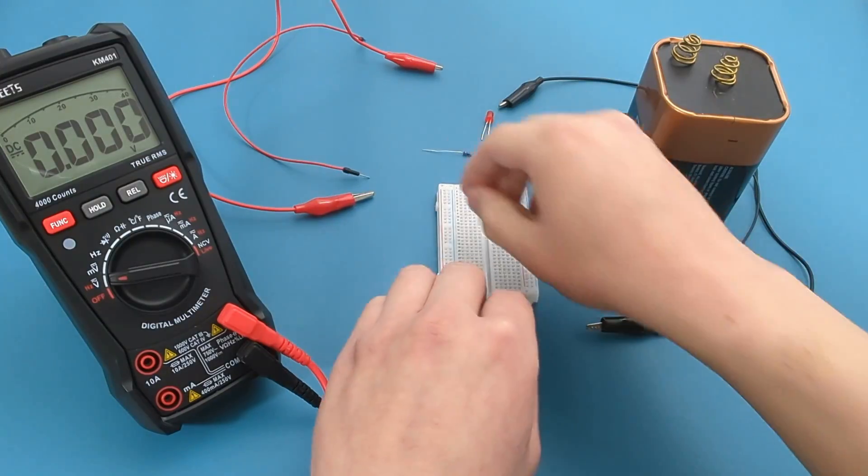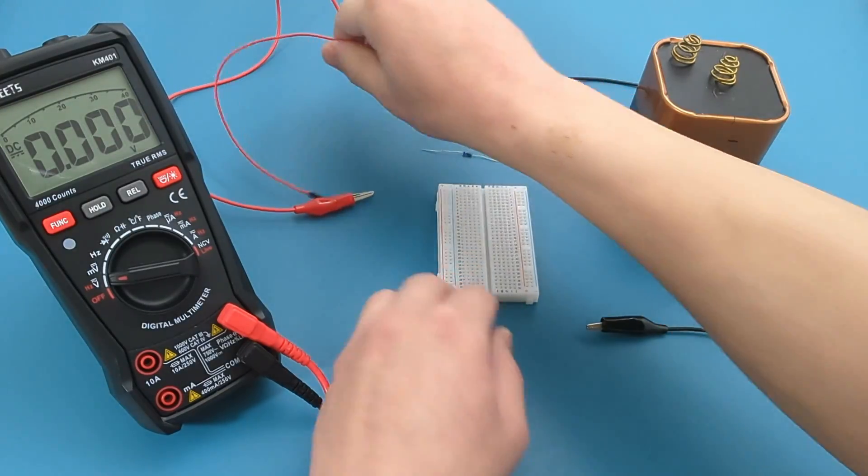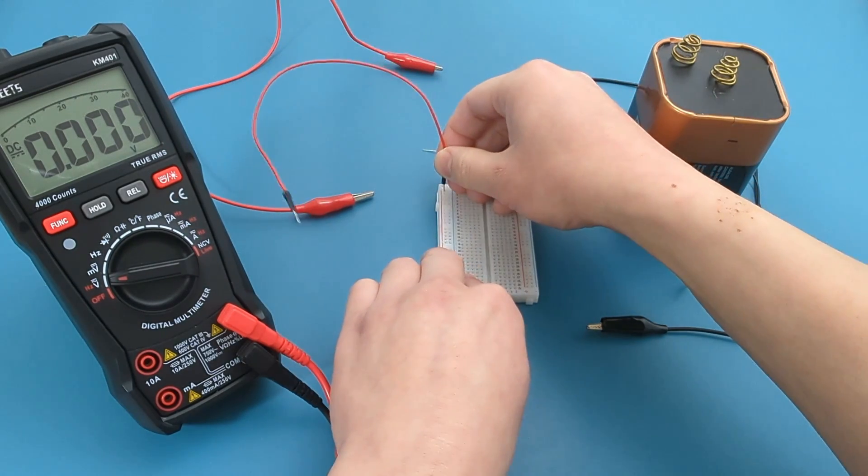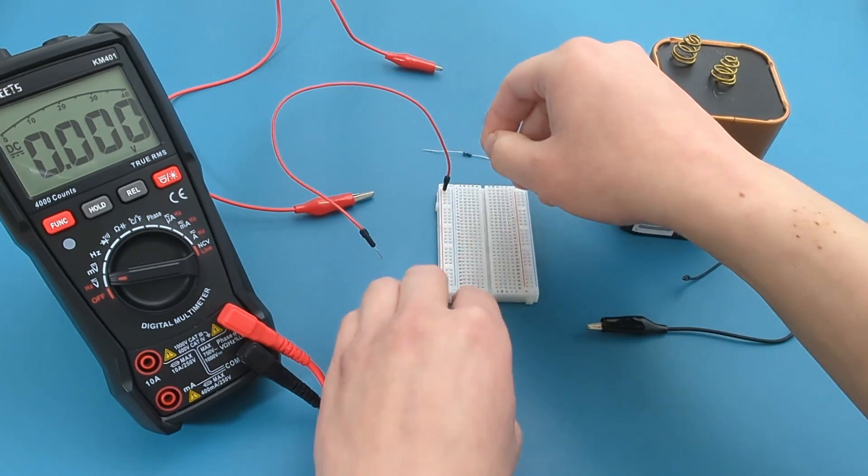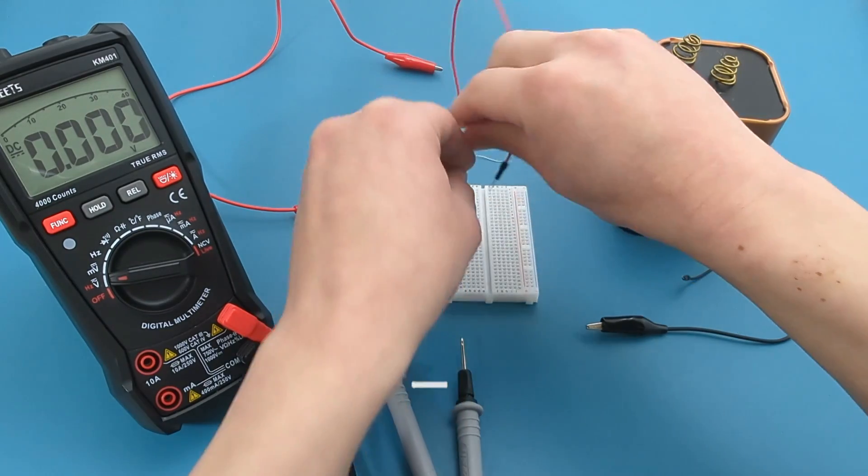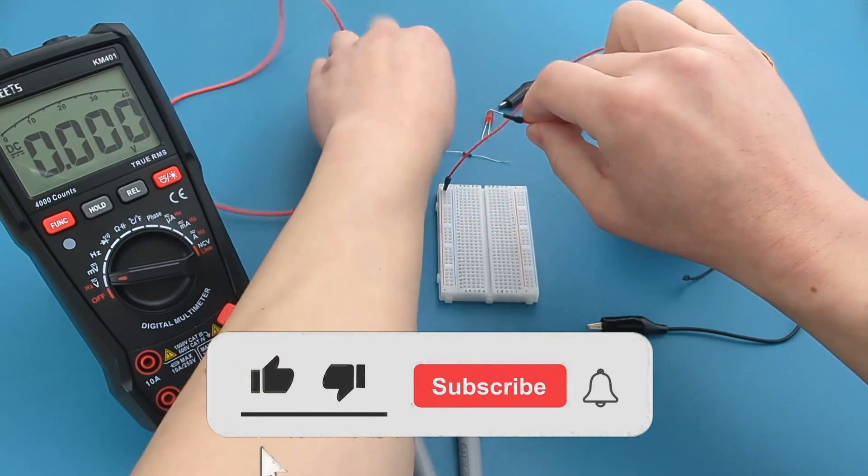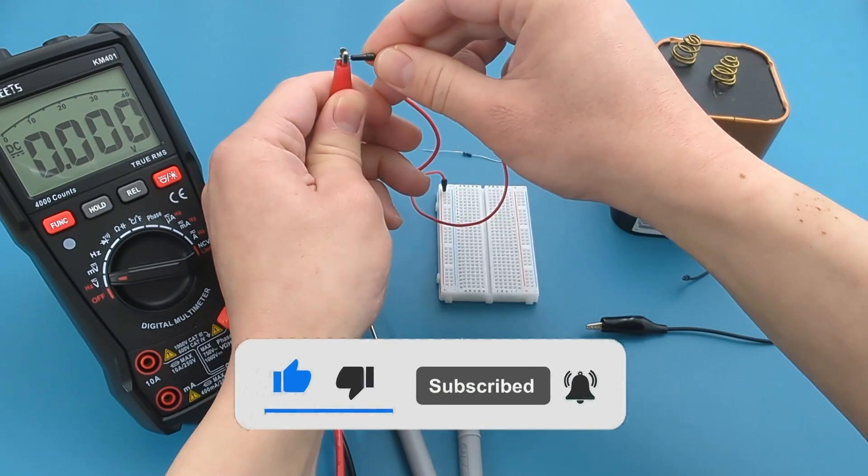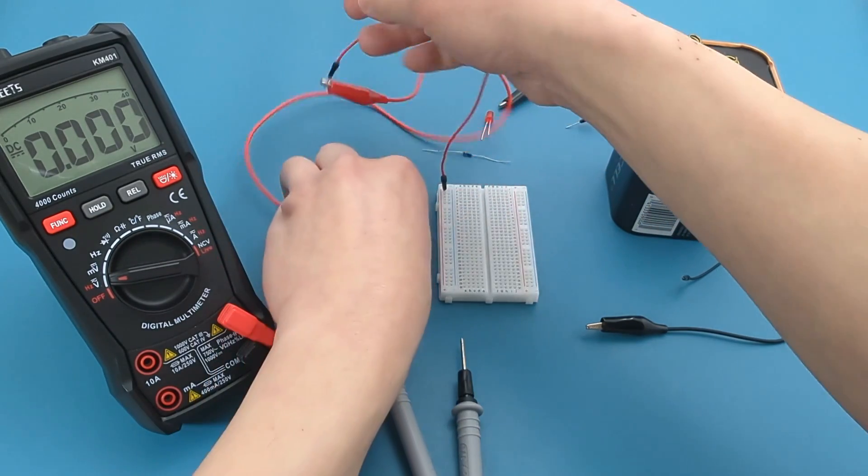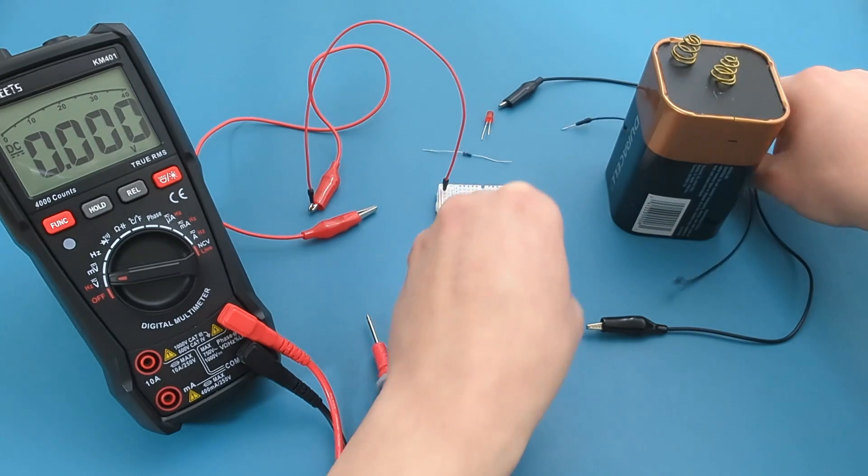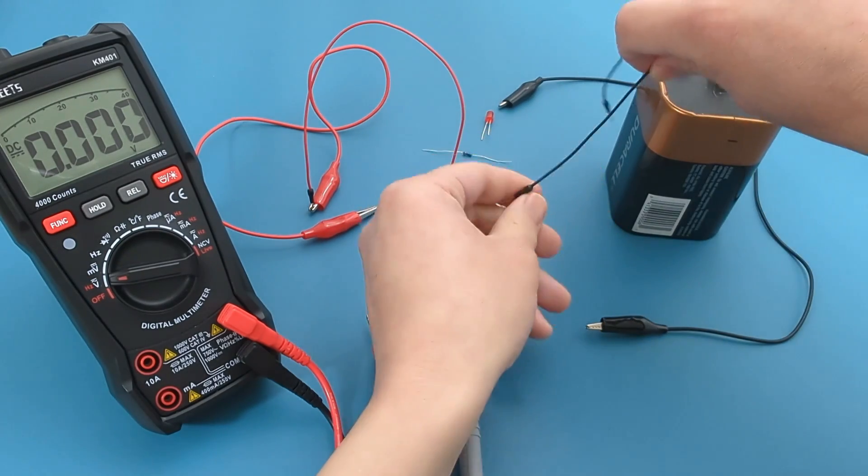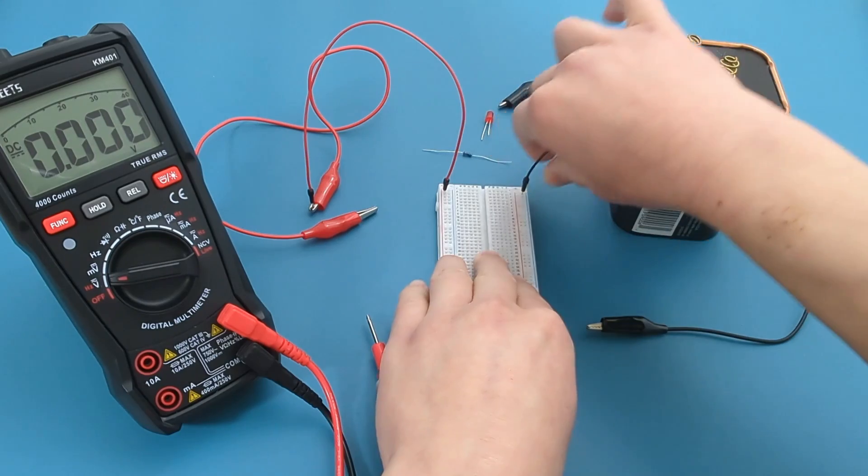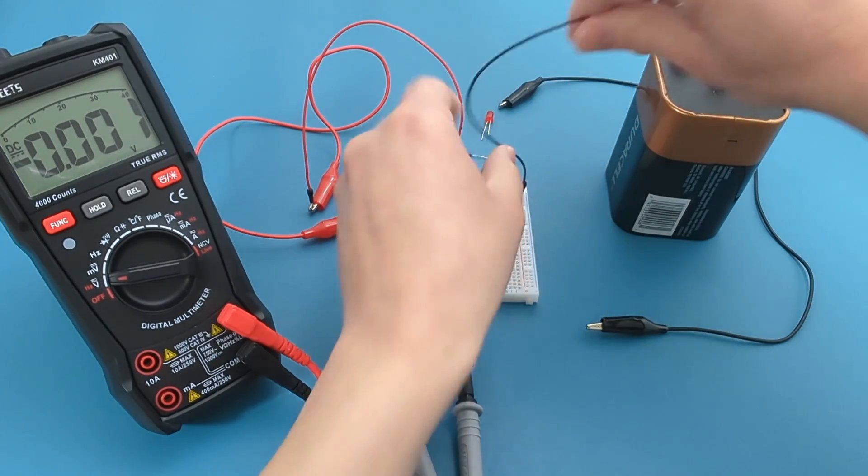Begin by attaching the red alligator wire to the positive terminal of the breadboard, and then link the other end of this red wire to the red alligator clip. Attach the black alligator wire to the negative terminal of the breadboard, and then link the other end of this black wire to the black alligator clip.